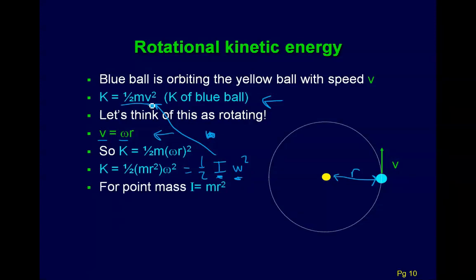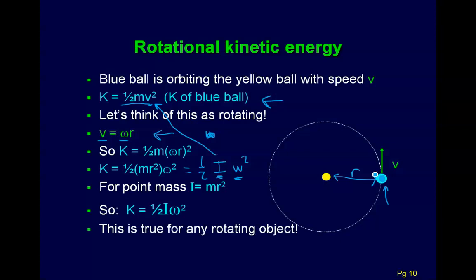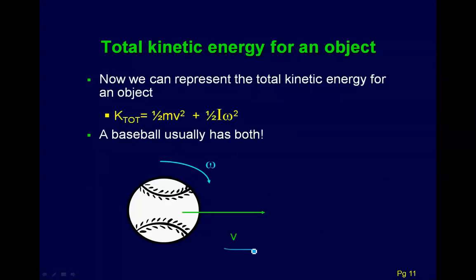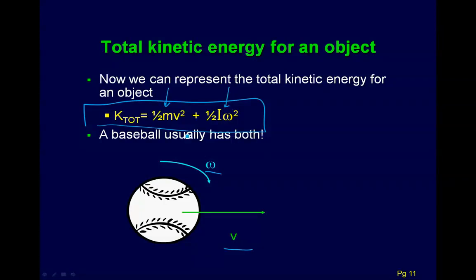An object that's moving both translationally with speed v and rotationally with angular velocity omega now has a total kinetic energy with two pieces: the translational piece and the rotational piece. For almost everything we did before, we're going to have a new rotational version of it — the letters are transcribed, almost like it's in a new language. But with rotations, everything's just going to be a little bit more complicated, and the first complicated piece is this i.